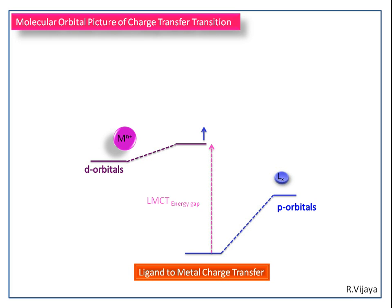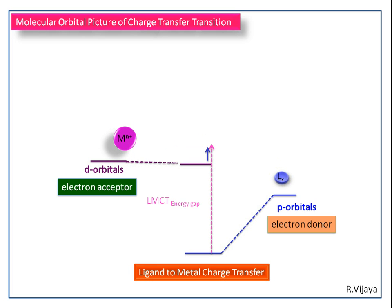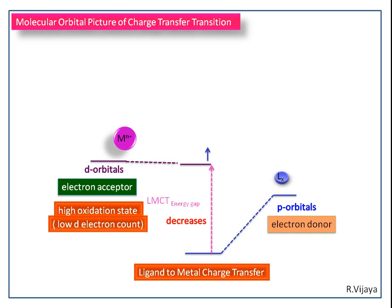Lowering the energy of the empty metal orbitals is expected to correlate with a lower LMCT energy gap. This lowering of the d orbital can be achieved by using the high oxidation state of the central metal ion, because it will have a low d electron count. Here the ligand acts as the electron donor, and the central metal ion can act as the electron acceptor.